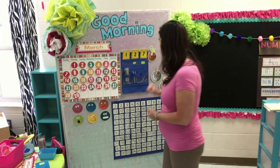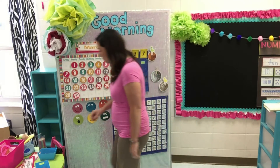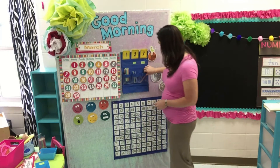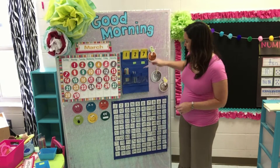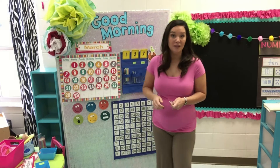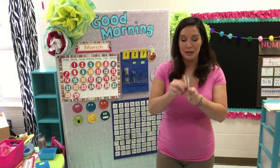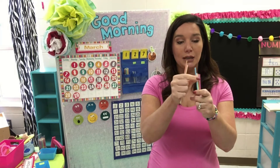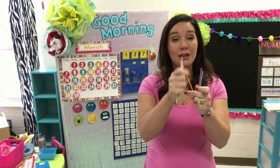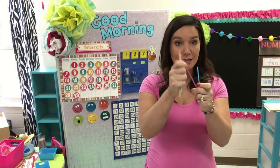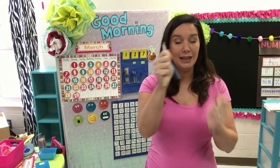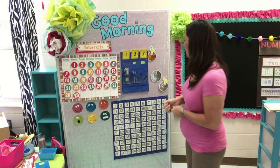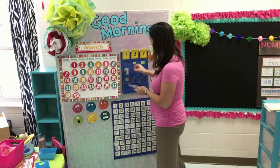We'll figure out how many days we've been in school. We're getting pretty close to 10 over here in my ones column, so let's just make sure we don't need to move them over. Count with me: 1, 2, 3, 4, 5, 6, 7, 8. Good — only 8, so we don't need to move them over.